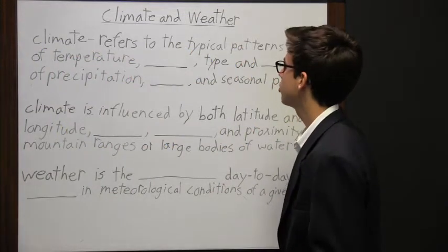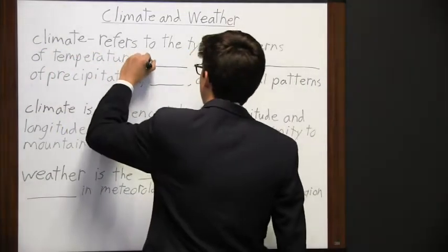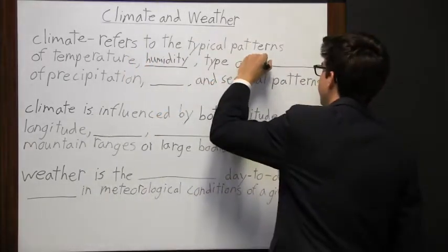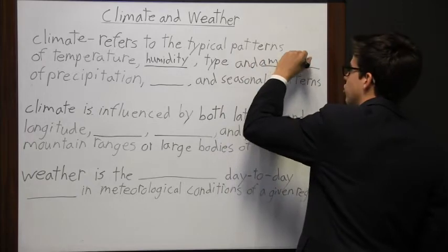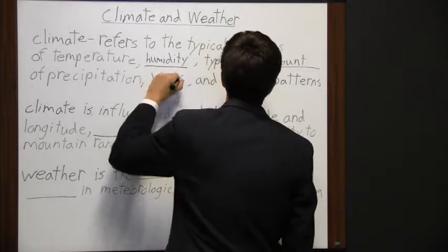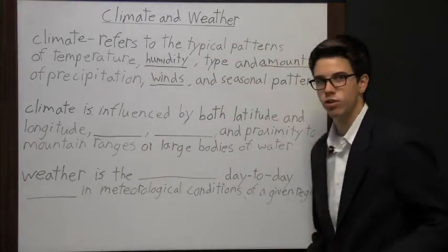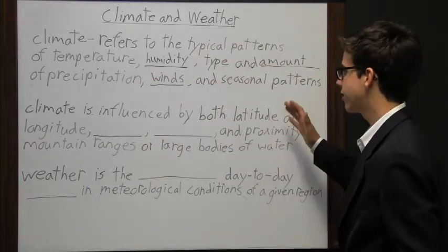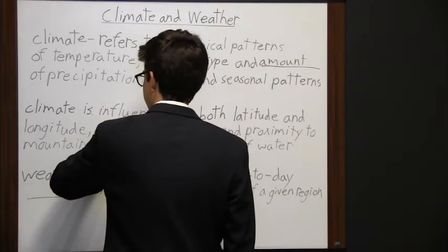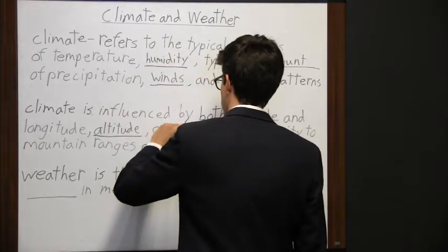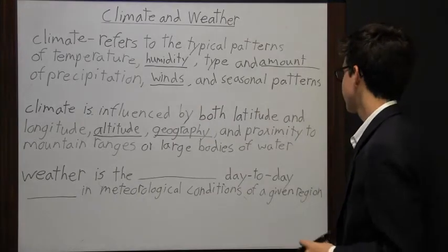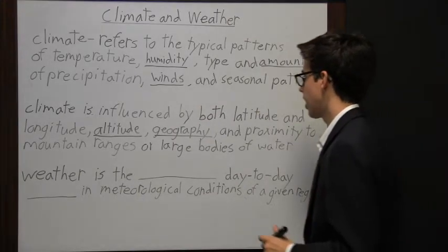Climate refers to the typical patterns of temperature, humidity, type and amount of precipitation, winds, and seasonal patterns. There are several things that really influence climate, and some of those are latitude and longitude, altitude, geography, and proximity to mountain ranges or large bodies of water.